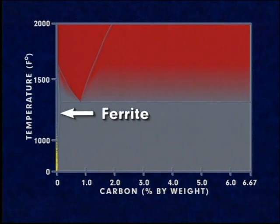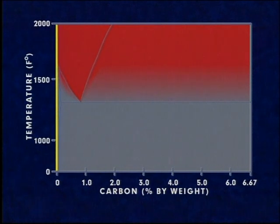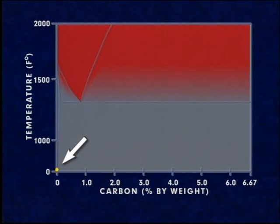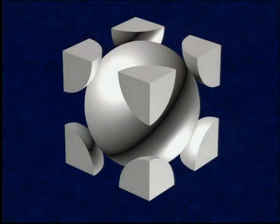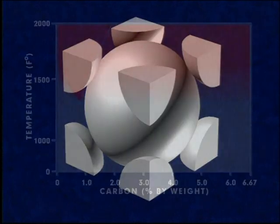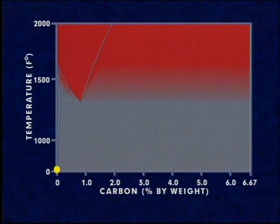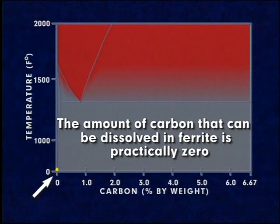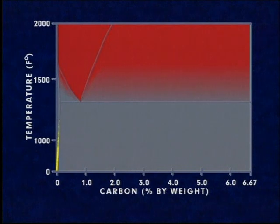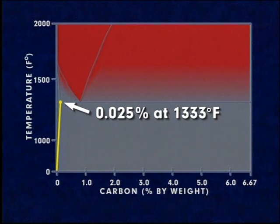The left-hand side of this diagram is ferrite. Ferrite is iron containing an extremely minute amount of carbon. At room temperature, ferrite is magnetic, relatively soft, and has a body-centered cubic crystal structure. At room temperature, the solid solubility, or the amount of carbon that can be dissolved in ferrite, is practically zero. The amount of carbon dissolvable in ferrite increases to only a maximum of 0.025 percent at 1,333 degrees Fahrenheit.